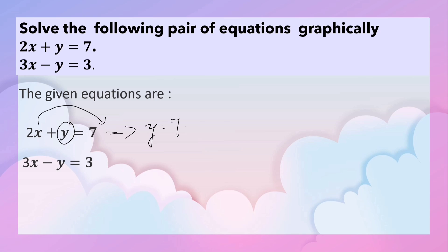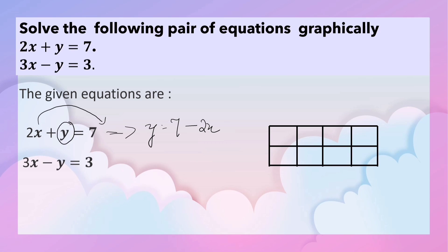We can observe that y is equal to 7 minus 2x. Now let us make a table of values for x and y. When x is equal to 1, y is equal to 7 minus 2, that is 5. If x is equal to 2, then y is equal to 7 minus 4, that is 3.